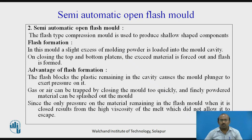Semi-automatic open flash mold: the flash type of compression mold is used to produce a shallow-shaped component. In this mold, a slight excess of molding powder is loaded into the mold cavity. On closing the top and bottom platen, the excess material is forced out and the flash is formed. Gas or air can be trapped by closing the mold too quickly, and finely powdered material can be splashed out of the mold.